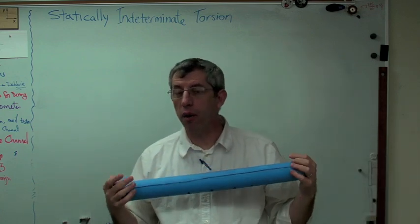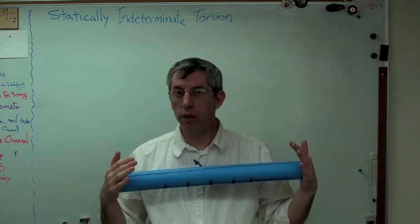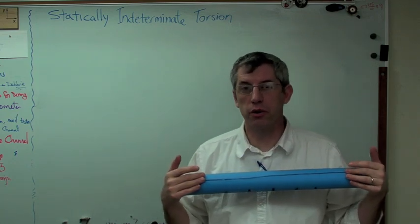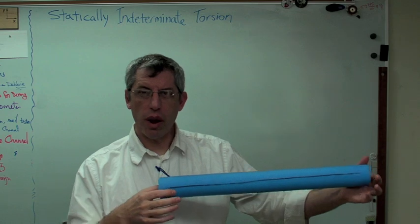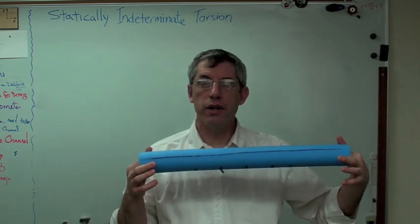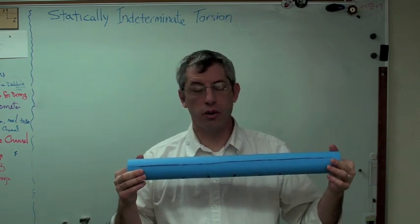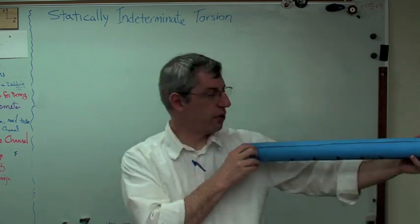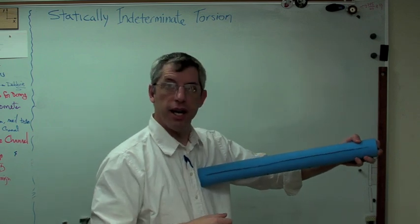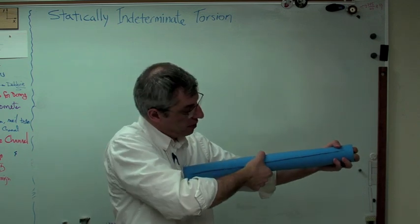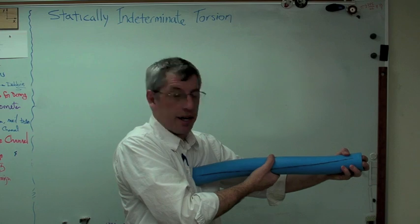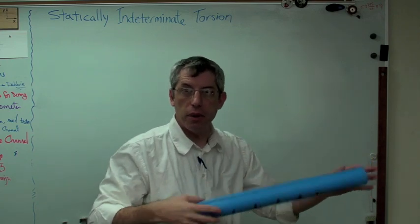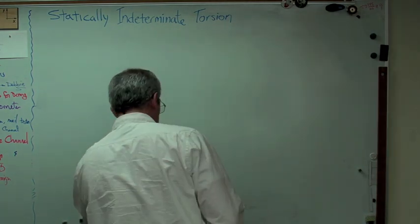A statically indeterminate problem is one in which statics alone is not enough to solve the problem. You have to use some other argument. We're going to use one from Strength of Materials. I can't quite fix both ends of this, but one type of statically indeterminate torsion problem is one in which both ends are fixed, and there's a torque in the middle. I've only got two hands, so I can't quite do that, but you can imagine if this end is fixed and that end is fixed, and I grab the middle and turn, I've got zero displacement there, zero displacement there, and I've got some angle in the middle. That's the problem we're going to solve.